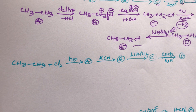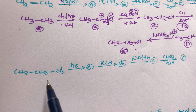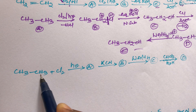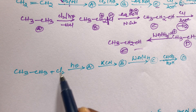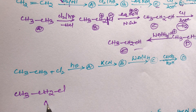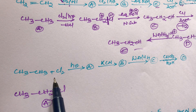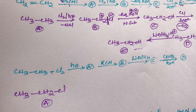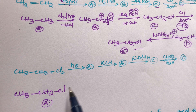Now for the second example: when ethane reacts with chlorine in the presence of sunlight, Cl₂ in sunlight undergoes free radical substitution. One hydrogen is replaced by one chlorine, giving CH₃CH₂Cl — ethyl chloride — as compound A. The first step is a free radical substitution reaction, as alkanes undergo free radical substitution.